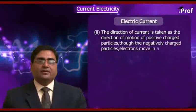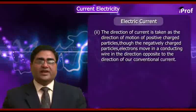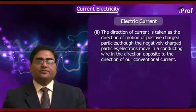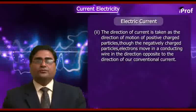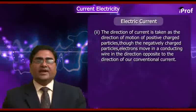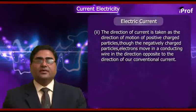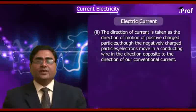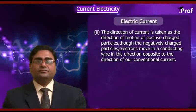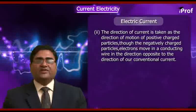Second, the direction of current is taken as the direction of motion of positive charge particles, even though the negatively charged particles — electrons — move in a conducting wire in the direction opposite to the direction of conventional current.